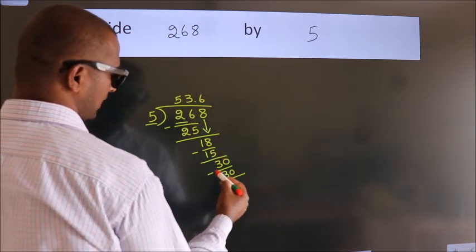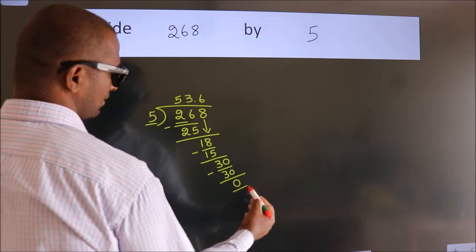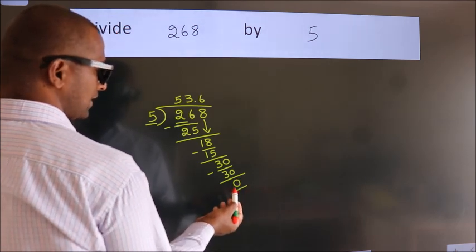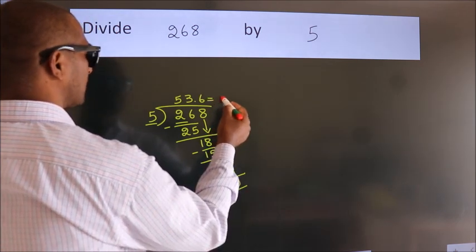Now we subtract. We get 0. We got remainder 0. So this is our quotient.